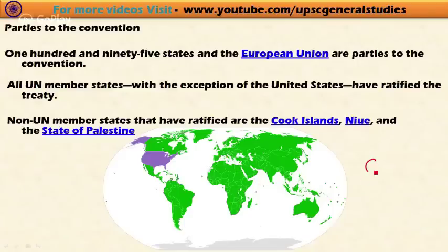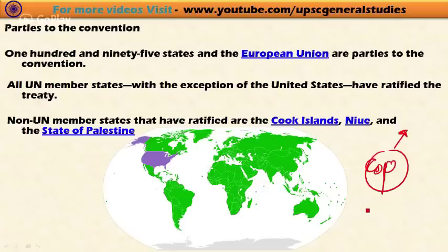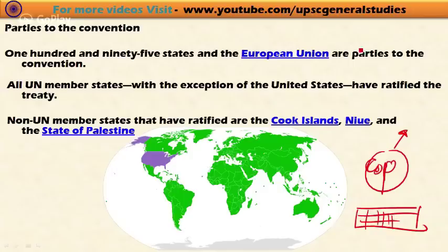This convention is managed through the Conference of Parties. Member countries represent themselves through representatives who meet in a forum called the Conference of Parties. This Conference of Parties takes important decisions regarding the governance, development, and implementation of the provisions under the convention.